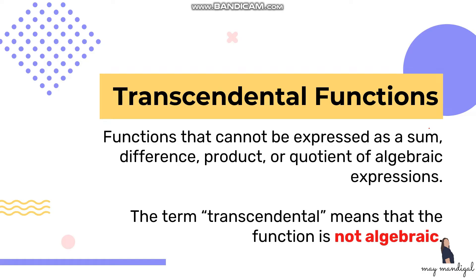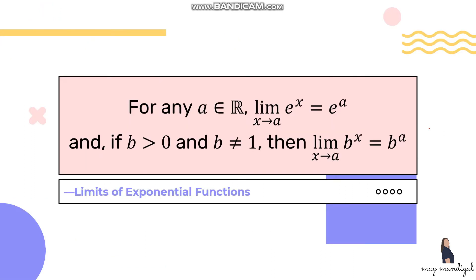We have three transcendental functions: the exponential function, the logarithmic function, and the trigonometric functions. For limits of exponential functions, for any a which is an element of real numbers, the limit of e raised to x as x approaches a is equal to e raised to a. And if b is greater than 0 and b is not equal to 1, then the limit of b^x as x approaches a is equal to b raised to a. This means we can just do direct substitution as long as the conditions are satisfied.